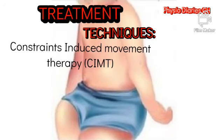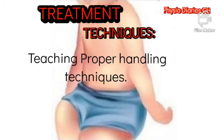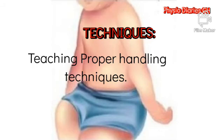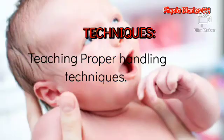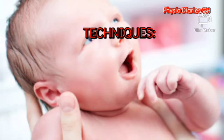Constraint-induced movement therapy is used to gradually train active movements in the affected arm, which facilitates functional movements. Caregivers are also taught proper handling techniques such as dressing and undressing the child. This helps to avoid subsequent stretching of the nerve that is already torn or stretched, to avoid worsening the child's condition.